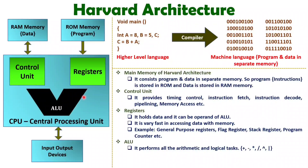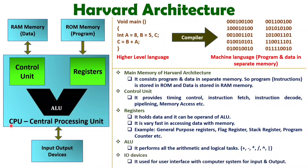The ALU is responsible for performing all arithmetic and logical tasks. Like addition, subtraction, multiplication, division, as well as all logical tasks like AND, OR, XOR, and NOT operations — all are performed by this ALU inside the CPU. When we talk about I/O devices, we give commands using input devices like mouse and keyboard. To observe output, we have output devices like monitor, printer, and speaker. There are various output devices to see how our output is generated by execution of the program.